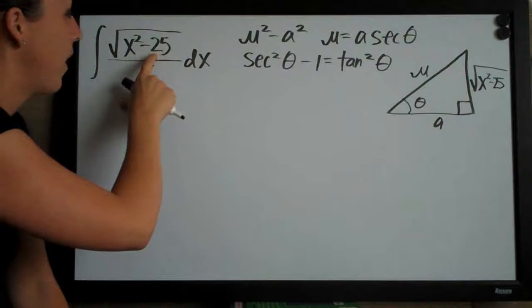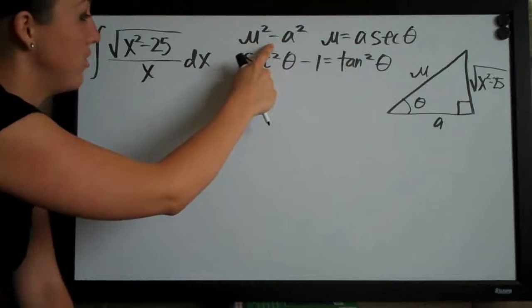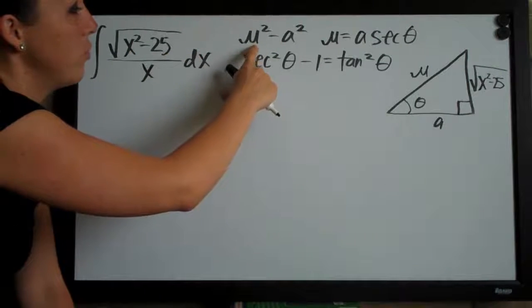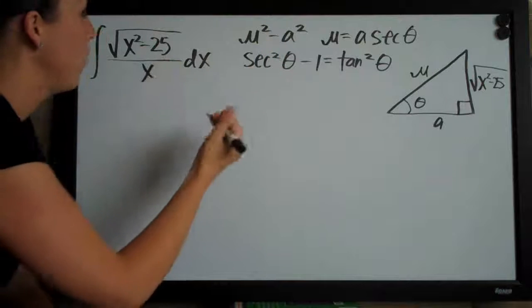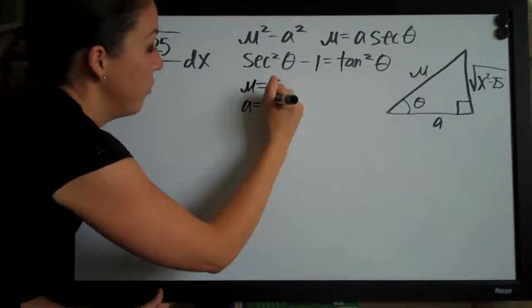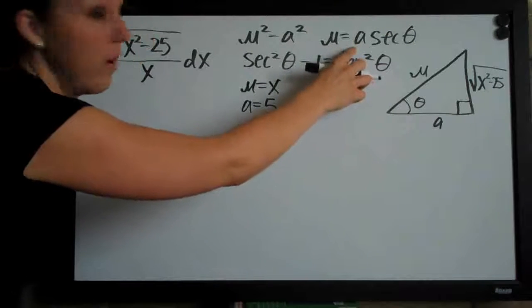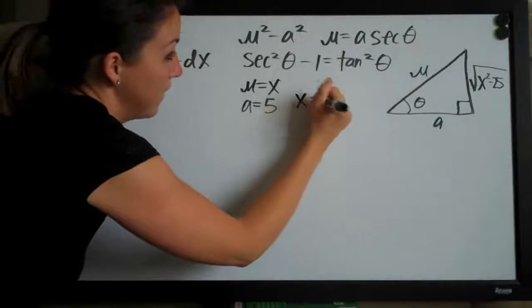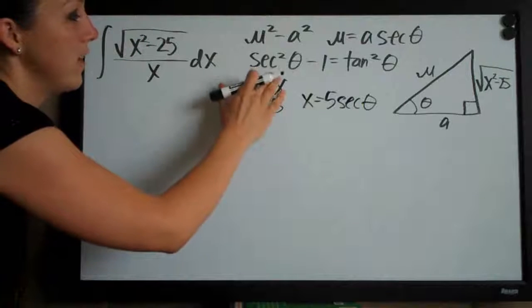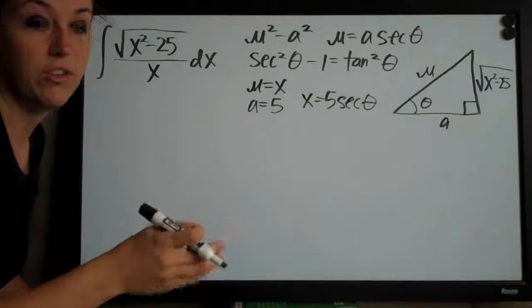Because we have x squared and then minus a constant, we're figuring out which trigonometric identity to use for substitution. Since u is always in place of x and a is in place of the constant, we're using u squared minus a squared because it matches our form. This means u equals x and a equals 5, so we get x equals 5 secant theta. The identity secant squared theta minus 1 equals tangent squared theta is what we'll use for substitution later on.